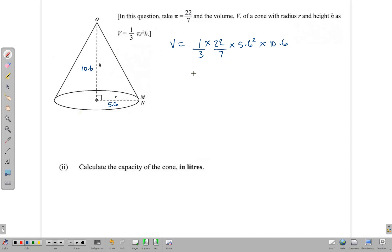This is just a matter of using your calculator. We type all this information in: 1 × 22 × 5.6² × 10.6, all of this is over 21, and that gives us 7313.2 divided by 21, which is 348. Since we're using centimeters in this question, this is 348 cm³.